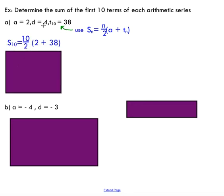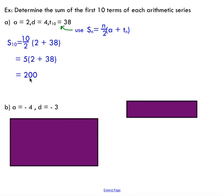You can see I'm not even using my d term, but I've got my a value, I'm going to substitute that for a. I've got my t10 term, I'm going to substitute that in for tn, and I'm just going to perform this simple calculation and you're going to see that I get 200 as the sum of my first 10 terms. So if I took the first 10 terms and add them all together, you'll see that I get 200.